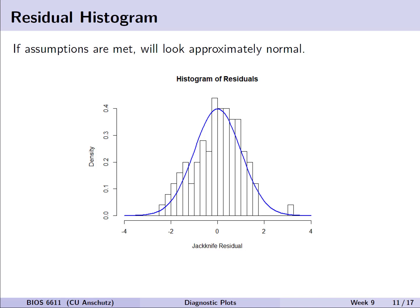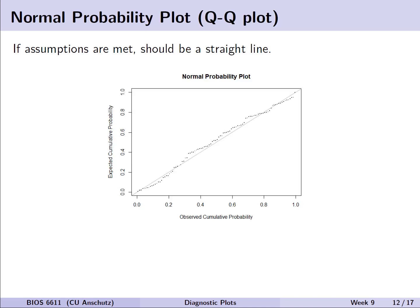For a residual histogram, we take those jackknife residuals and make a histogram of those values. If our assumptions are met, it should look roughly or approximately normal — which in this case looks fairly close. As humans, we're good at picking out patterns where none may exist, when in fact we just need approximate fits. Another way to evaluate the normality assumption is through the normal probability plot, or Q-Q plot. If the assumptions are met, this should be a straight line — which in this case is fairly close. We do see a little deviation, but since we simulated the data and know the assumptions are met, it generally looks fairly good.